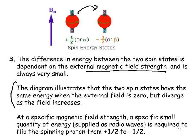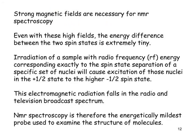The two spin states have the same energy when the external field is zero, but they diverge as the field increases. At a specific magnetic field strength, a specific small quantity of energy — and it is small, falling within the radio waves part of the spectrum — is required to flip the spinning proton from the plus-a-half to the minus-a-half state. Strong magnetic fields are necessary for NMR spectroscopy. Even with these high fields, the energy difference between the two spin states is extremely tiny.